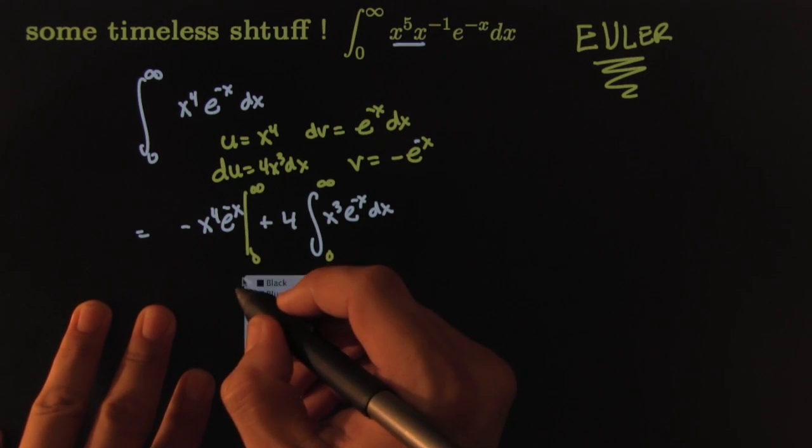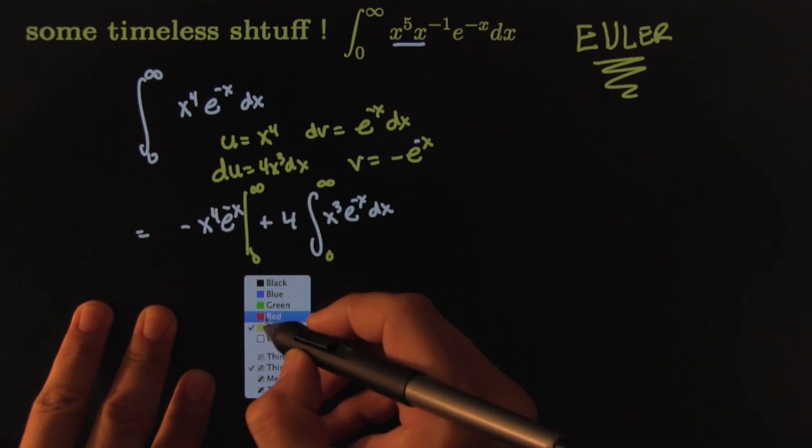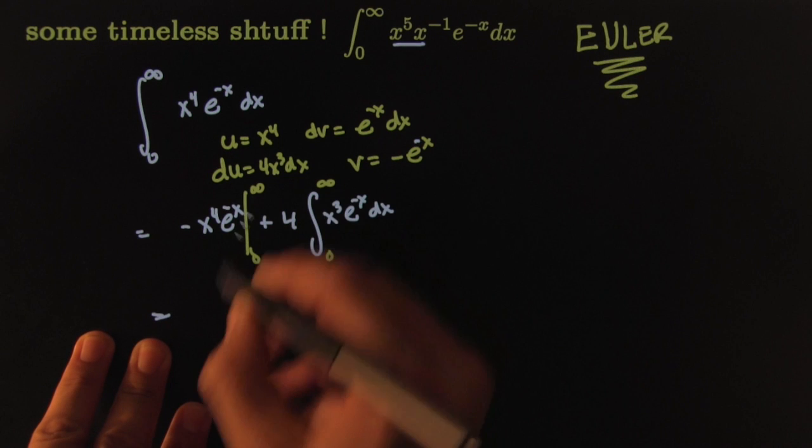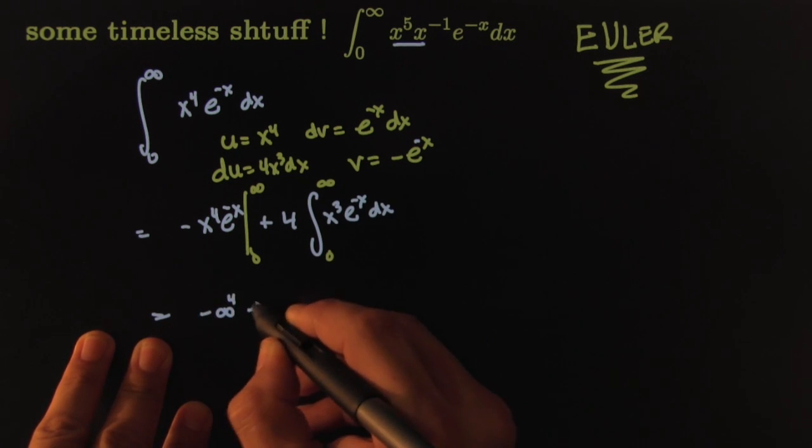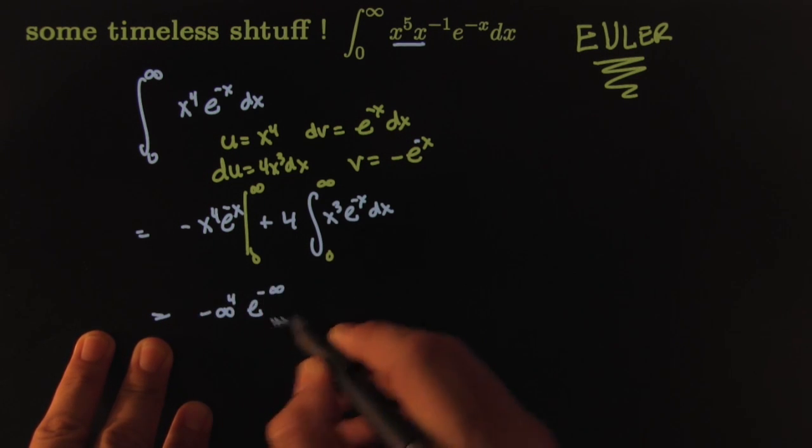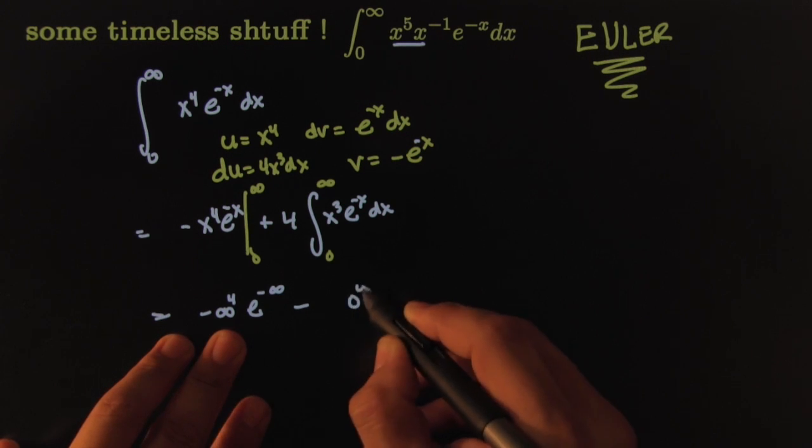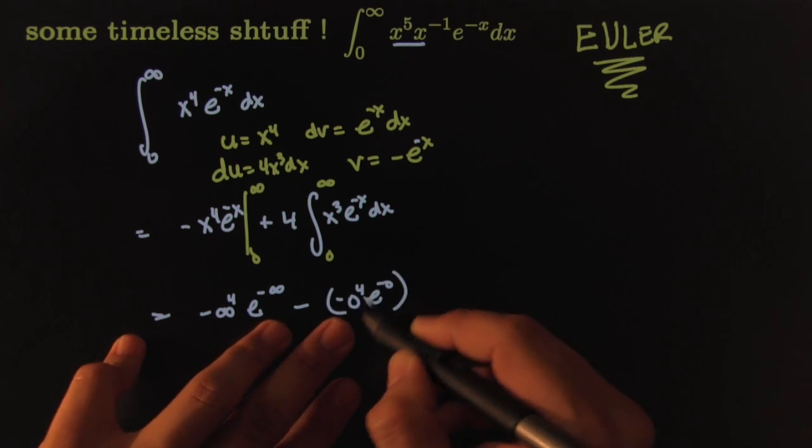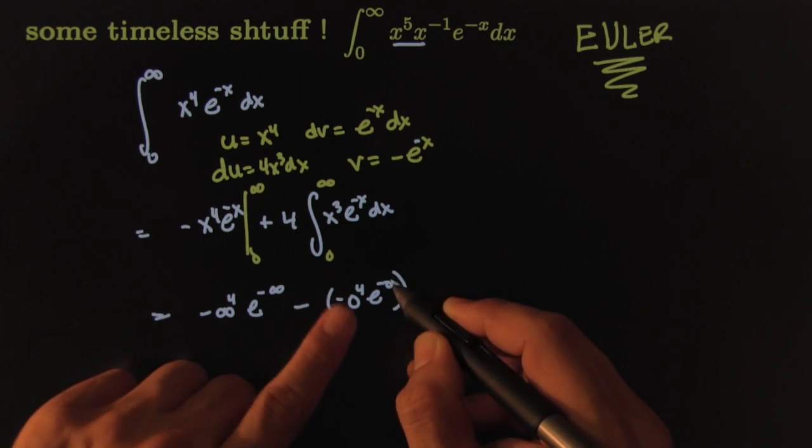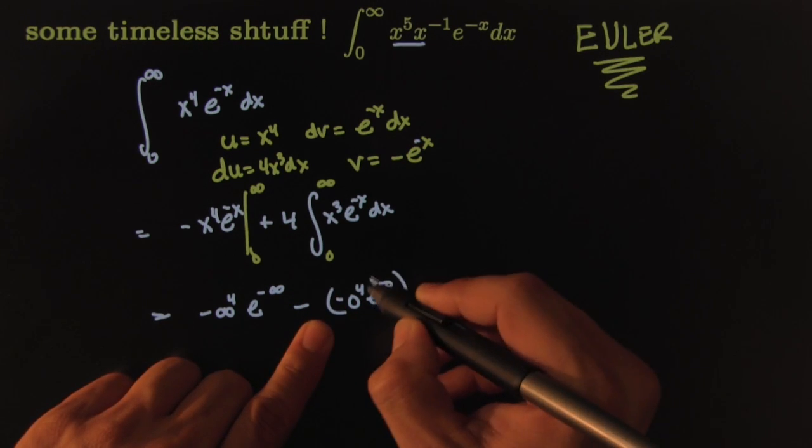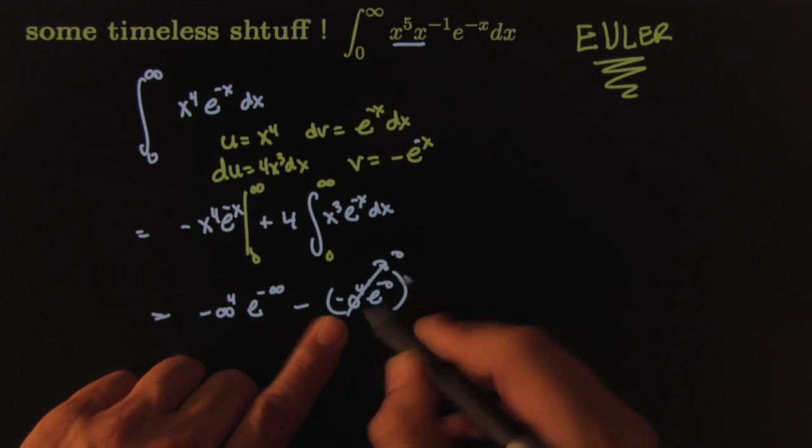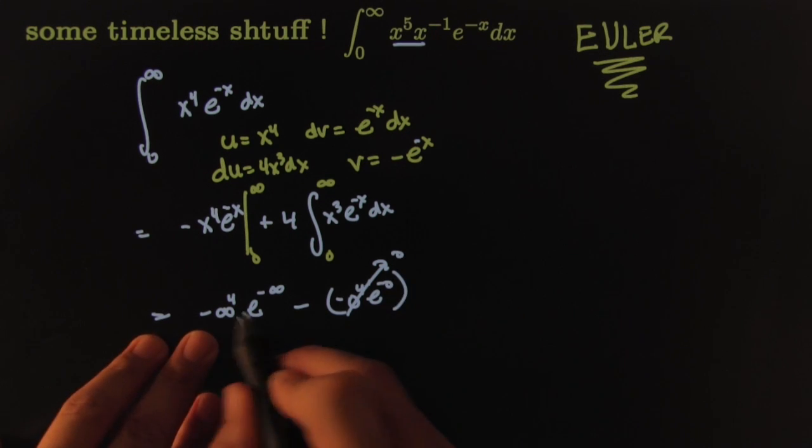When I try to handle this one, here's what's going to happen. I go on and I plug infinity. I get negative infinity to the fourth times e to the negative infinity, minus zero to the fourth e to the negative zero. This piece is no problem. This gives you e to the zero is one, so it's one times zero. This piece is zero, it's not even indeterminate. That piece I can handle.